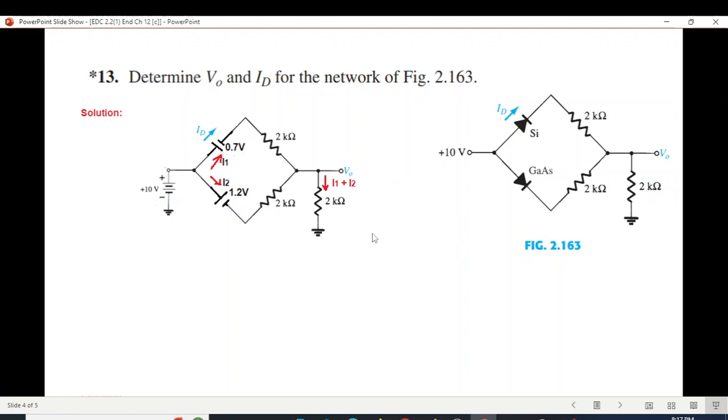And now we'll solve the two loops, the upper loop and the lower loop to find I1 and I2. And also note that to find V0 we need to find I1 plus I2 and that multiply by 2 will give us V0.